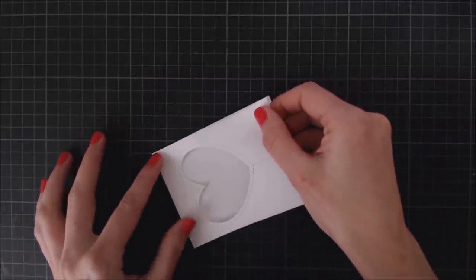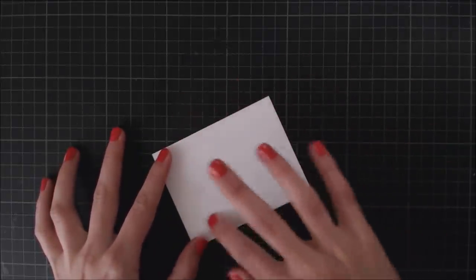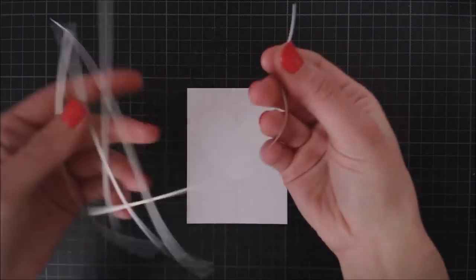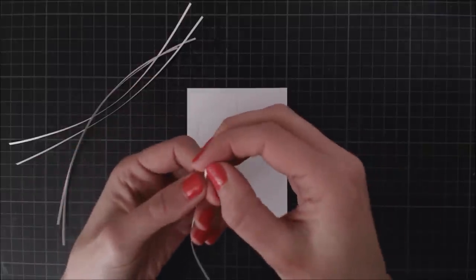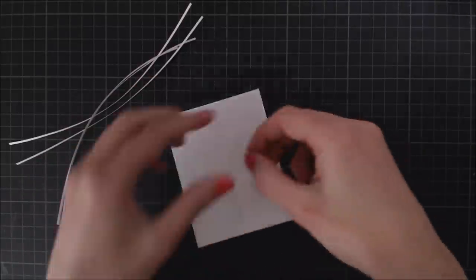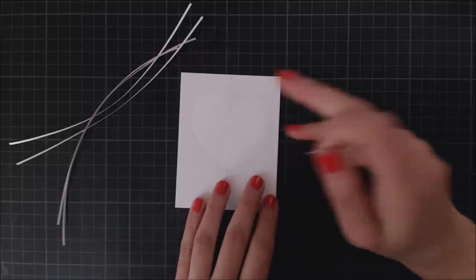Of course, you can use any other heart die you have on hand, even create your own mask, drawing a heart and cutting it off with your scissors. So I have this bunch of superfine stripes that I previously cut out from masking paper. And what I want to do is to create one of those geometric hearts that are so trendy right now.